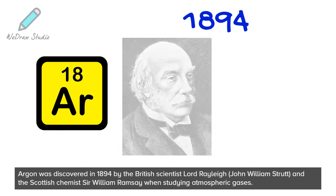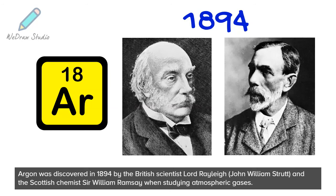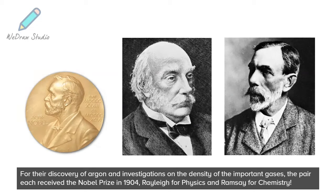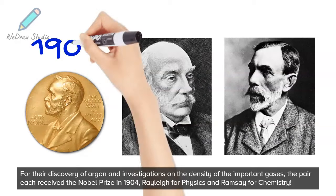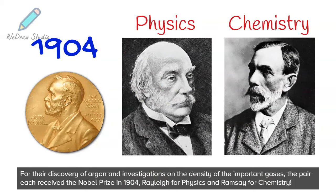Argon was discovered in 1894 by the British scientist Lord Rayleigh (John William Strutt) and the Scottish chemist Sir William Ramsay, when studying atmospheric gases. For their discovery of argon and investigations on the density of important gases, the pair each received the Nobel Prize in 1904 — Rayleigh for Physics and Ramsay for Chemistry.